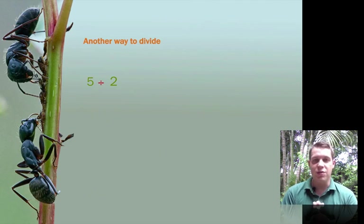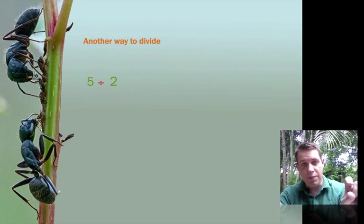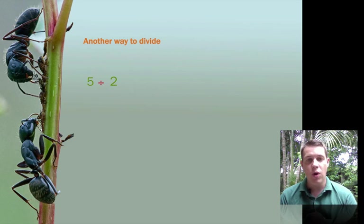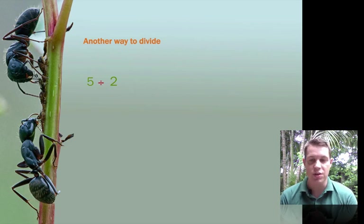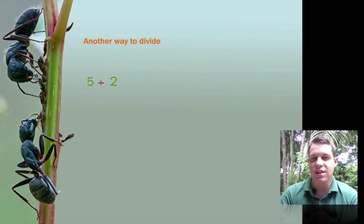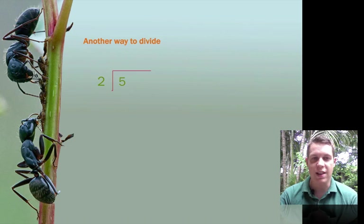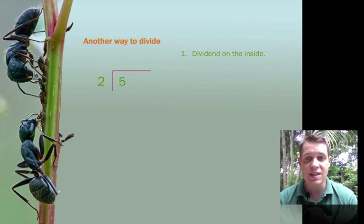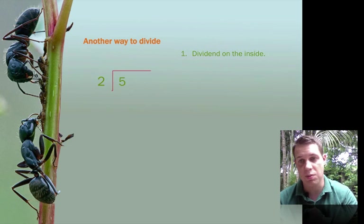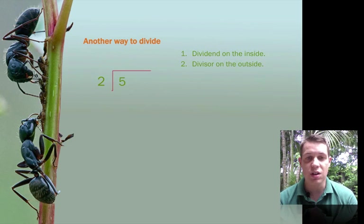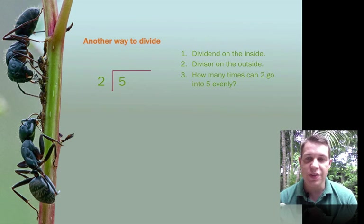Now, that was pretty easy to figure out the problem with having the pictures and moving the aphids around. Now, what if we had to do this with only numbers? Well, this is what we're going to do. We're going to write the division problem a little bit differently. We're going to write it like this. In this case, the dividend goes on the inside of this little box we make. The divisor goes on the outside.